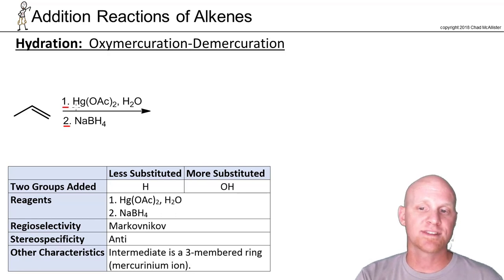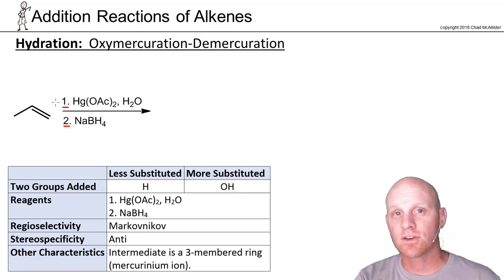What this actually means is that we're going to add mercuric acetate and water in step one to the alkene. We're going to let it react, purify the result, and to that purified result we're then going to separately add sodium borohydride. So these are separated into two different time points.